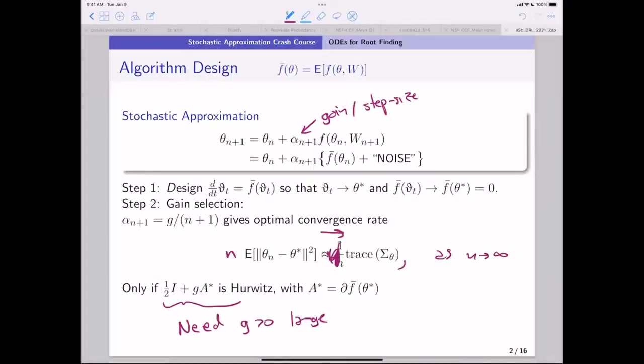Now the theory there is not as mature. That's still a work in progress. But the big caveat is that you need this to be Hurwitz. So you need large, you need G to be sufficiently large. You've got to crank up the gain. But it's wonderful. We have this result. We have, for free, a way of thinking about rates of convergence. And the matrix is a very simple form. This matrix, this covariance.